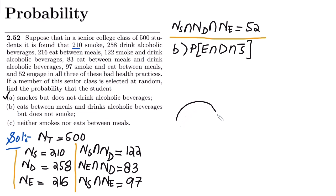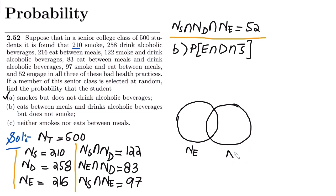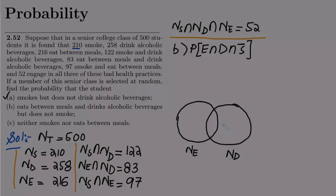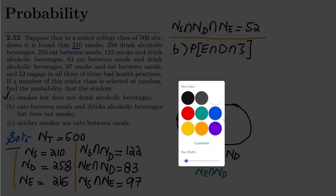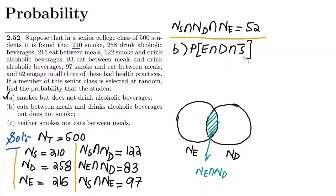To solve this, I'll use a Venn diagram. Here we have the number of students who eat between meals, and similarly the number of students who drink. The area in between them represents the number of students who eat between meals and also drink — that is the common intersection area N(E ∩ D).